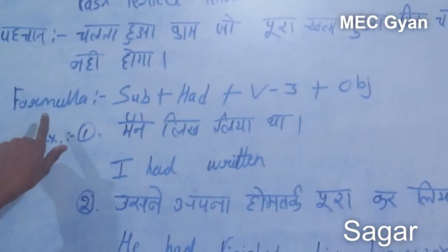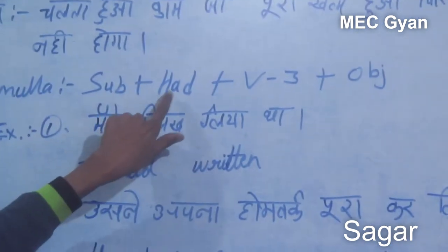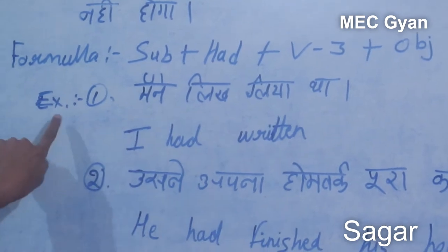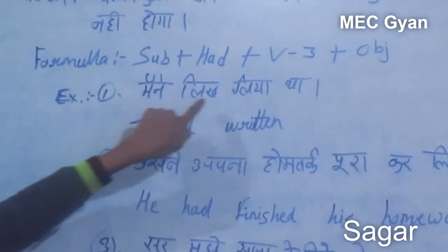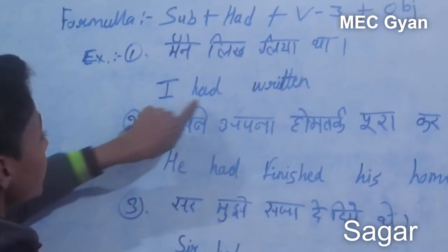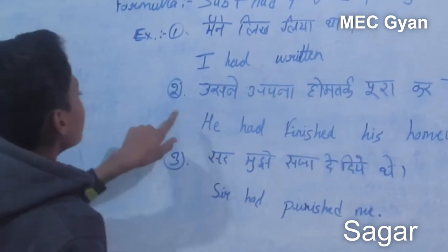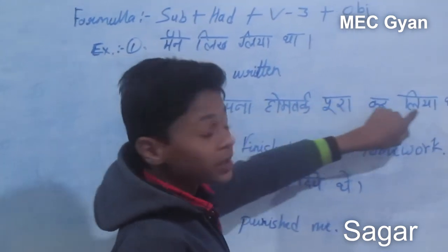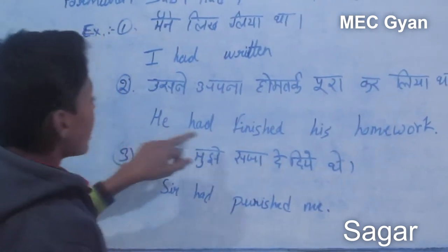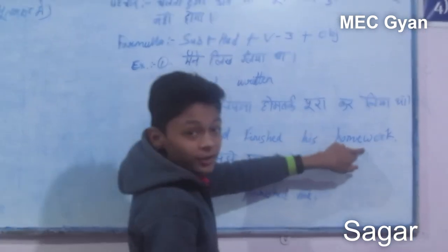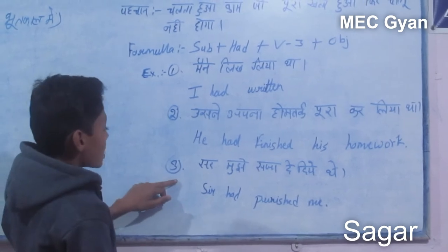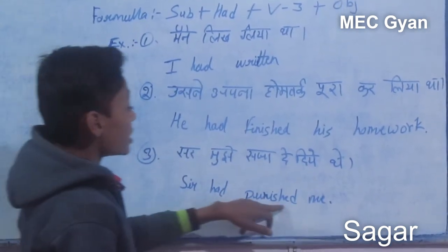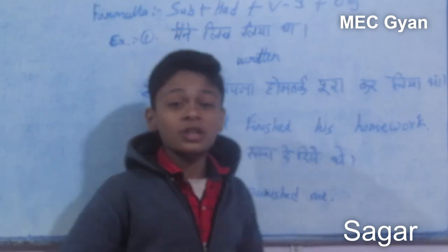Its formula is subject plus had plus verb third form plus object. Its first example is 'I had written.' Its second example is 'He had finished his homework.' Third example: Sir had punished me.